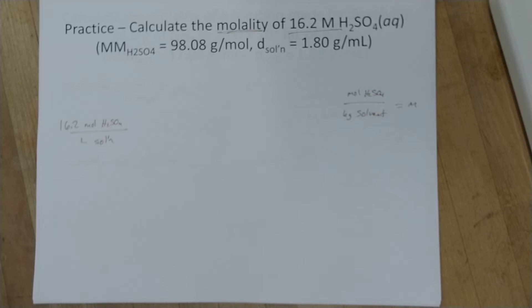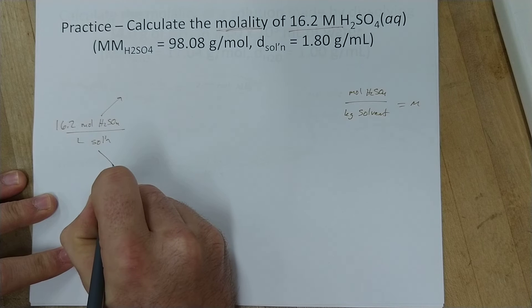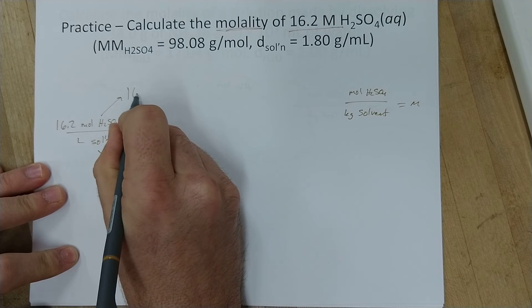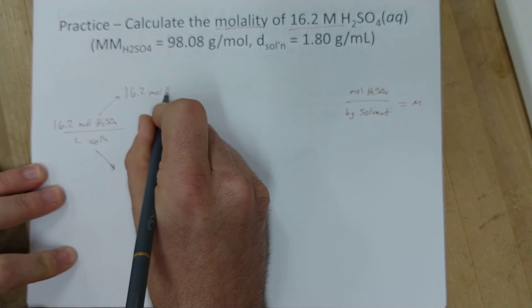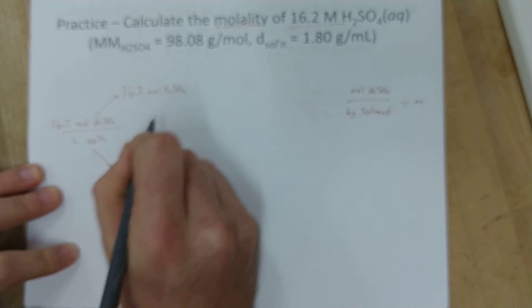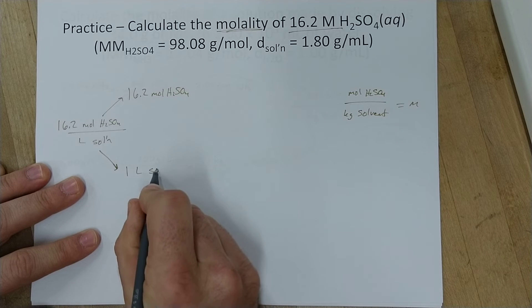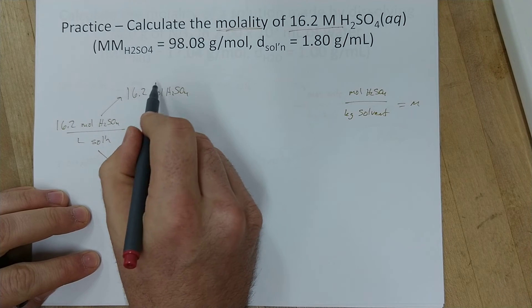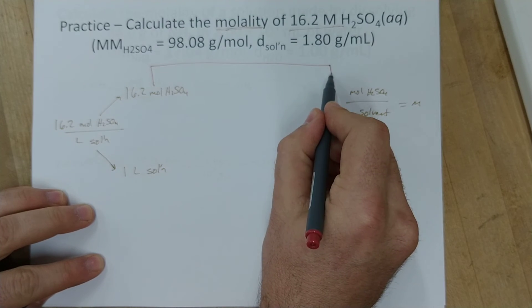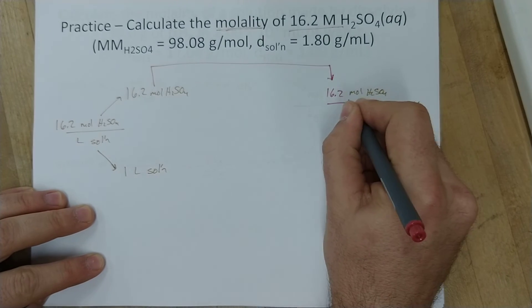Alright, so what we need to do first for this is actually just take this apart and be able to deal with it separately. So 16.2 mols of H2SO4 is in one liter of this solution. So the very first thing is actually pretty easy. We're just going to take the 16.2 mols right over here and plug it in. 16.2 mols of sulfuric acid.